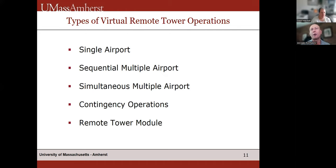The types of virtual remote tower operations currently proposed include: single airport operations, the simplest and most widely accepted; sequential multiple airports, where you control one airport from say 5 to 9 AM and then switch to another airport in a different location; and simultaneous multiple airports, probably the most difficult scenario, where you have to control two airports at the same time.